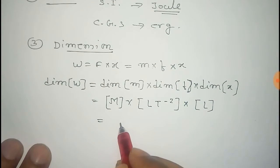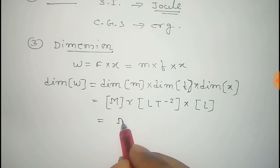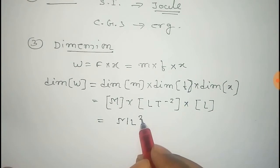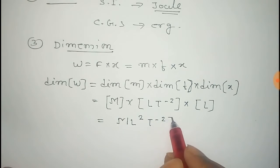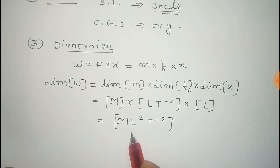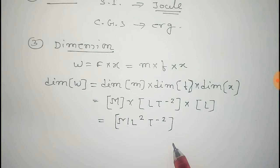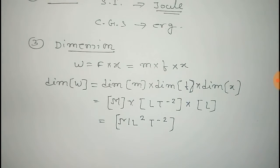So we get that equals M L square T to the power minus 2, and thus we get the dimension of work, that is M L square T to the power minus 2.